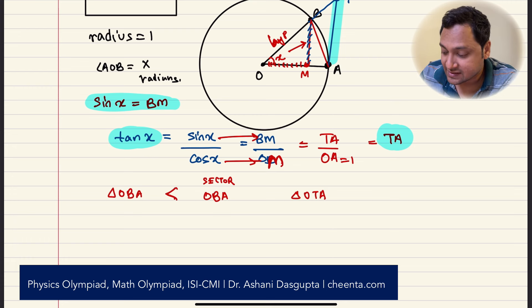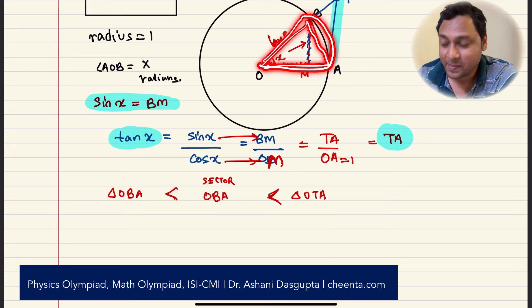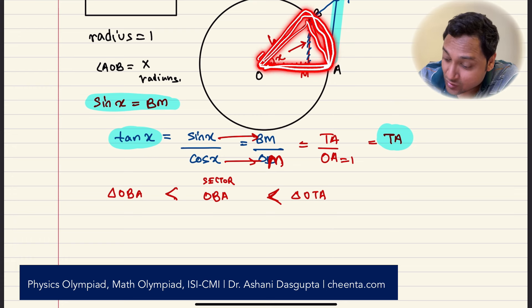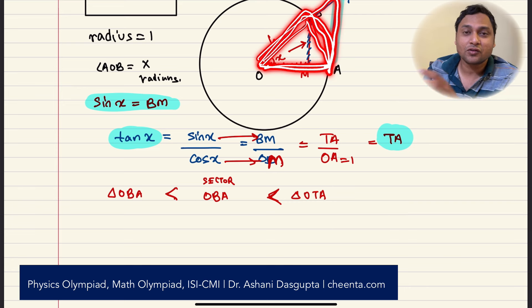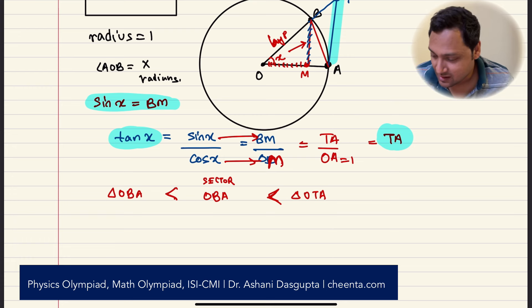OBA is less than the sector OBA is less than OTA. You can easily see that because OBA is contained in the sector OBA. Right? Sector of the circle OBA. And that is again contained in OTA, the triangle OTA. So of course, triangle OBA will be the smallest one. Then we have the sector OTA. And then we have the triangle OTA. Awesome.